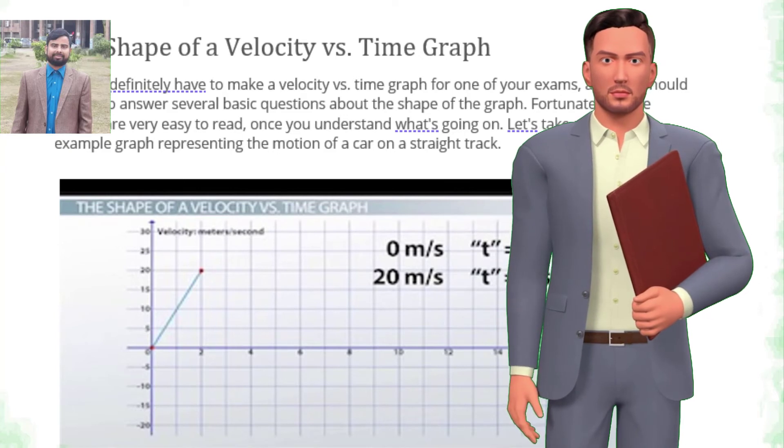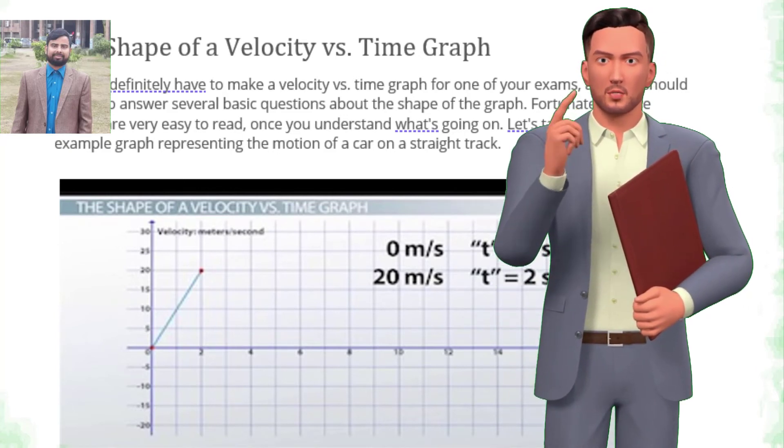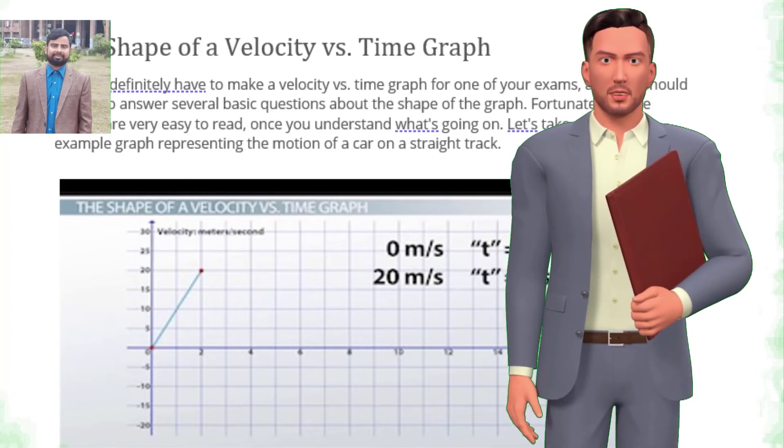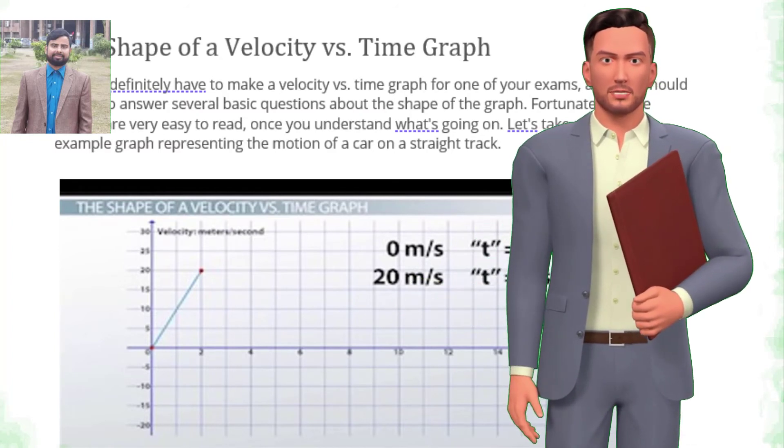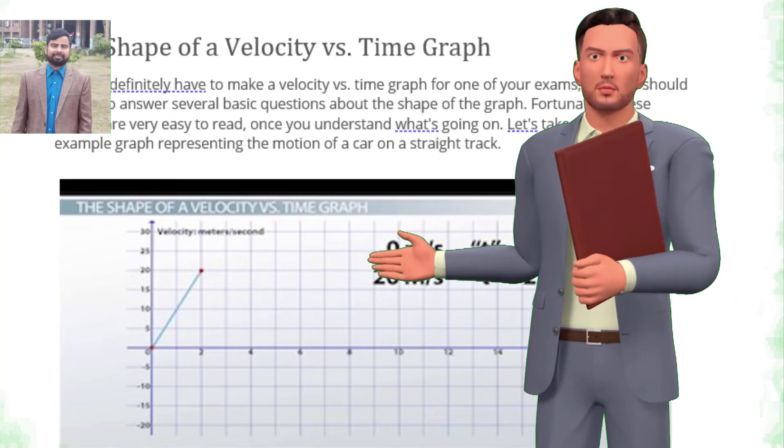Let's take a look at an example graph representing the motion of a car on a straight track. As you can see above, we have velocity on the y-axis and time on the x-axis. As the car starts moving, the velocity changes from 0 meters per second to 20 meters per second between t equals 0s and t equals 2s.